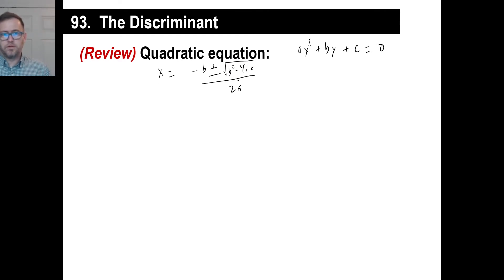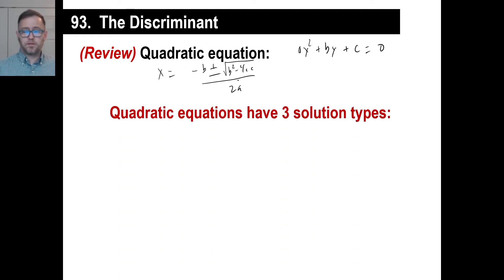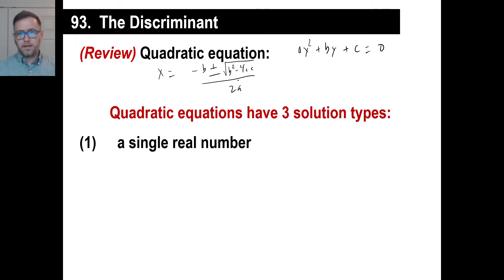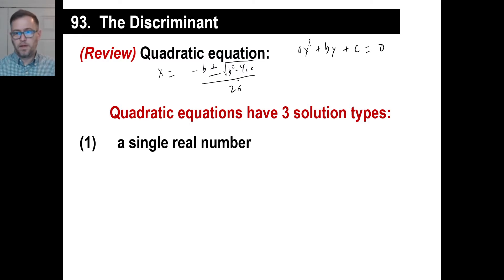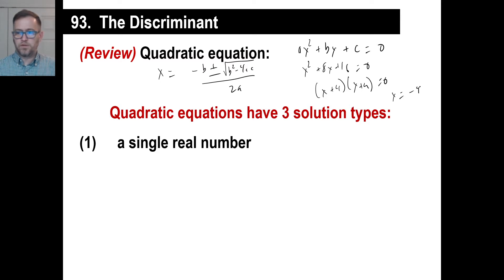When you do the solution to these quadratic equations, basically there are three possibilities — three solution types. You probably should just go ahead and write this down. One possibility is that you have a single real number. For example, if you have a quadratic equation like x² + 8x + 16 = 0, you'd factor that as (x + 4)(x + 4) = 0, and the answer is just negative 4. There's just going to be one answer, and that's all.